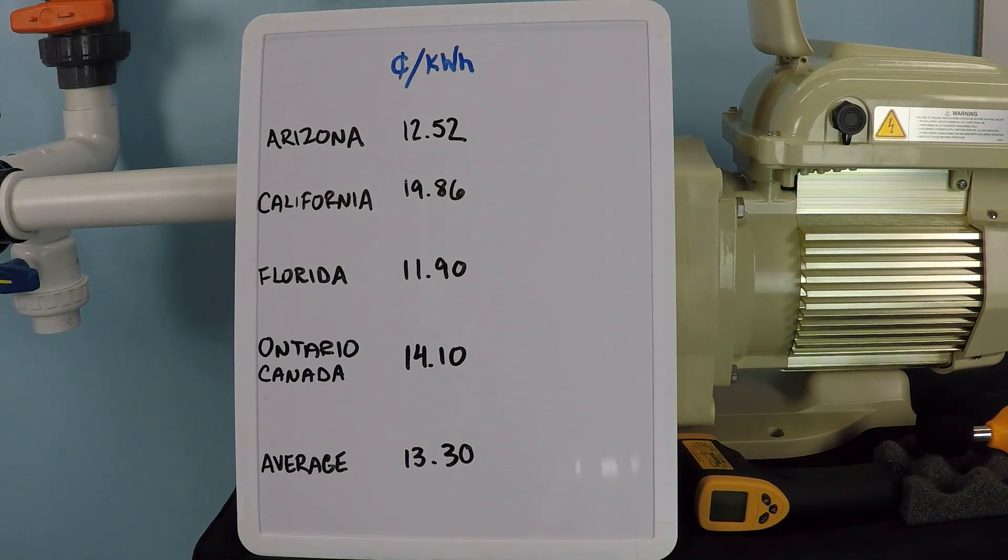One hour at full speed operation on this pump will use the same amount of electricity as 64 hours of operation running at one quarter speed. That is a huge potential savings.